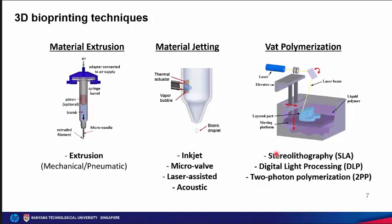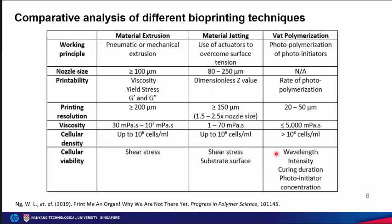According to ASM standards, bioprinting techniques can be classified into three main groups: material extrusion (mechanical and pneumatic), material jetting (inkjet, microvalve, laser-assisted, and acoustic bioprinting), and vat polymerization, which includes stereolithography (SLA), digital light processing (DLP), and two-photon polymerization (2PP).